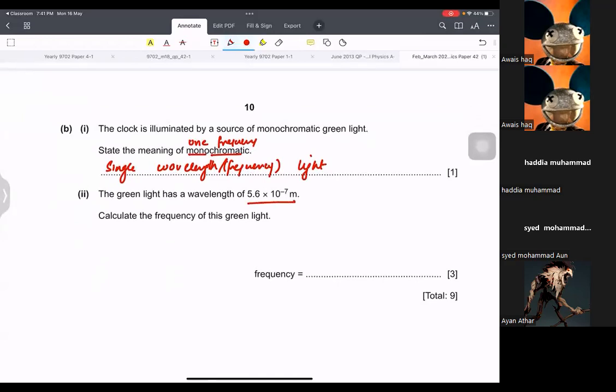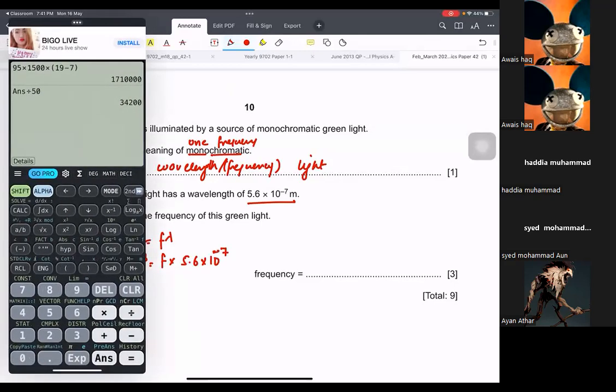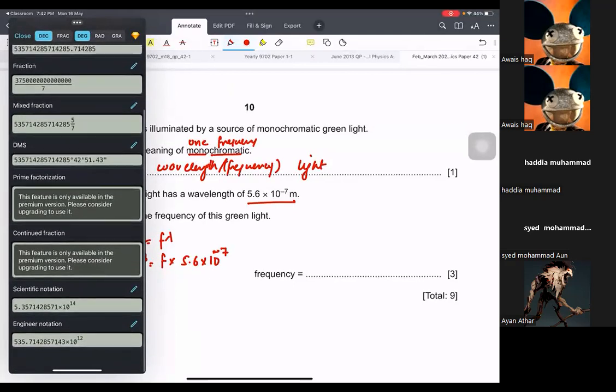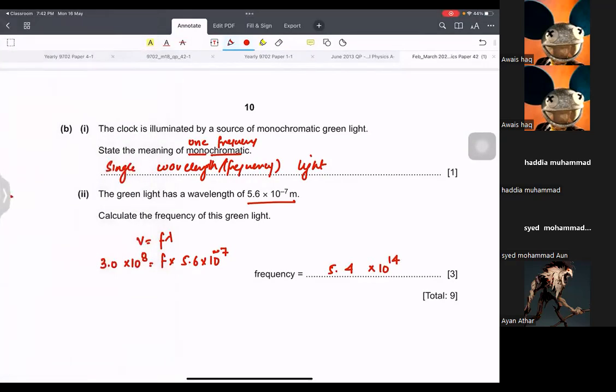Green light has a wavelength of this. Calculate the frequency. V is equal to f lambda. Green light is in electromagnetic spectrum. So speed has to be this. And frequency and this wavelength. So what you do? Calculate it. So 3.0 times 10 raised to power 8, you divide it by 5.6 times 10 raised to power minus 7. So 5.4 times 10 raised to power 14 hertz is the answer to this. By the way, write hertz or you won't get the marks.